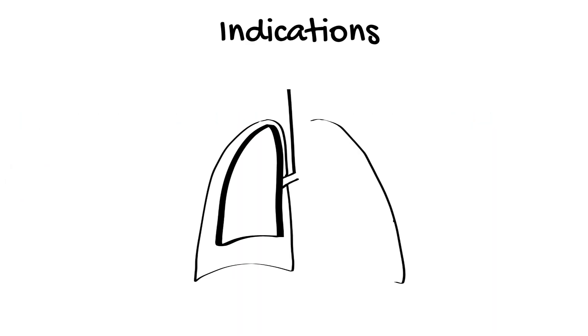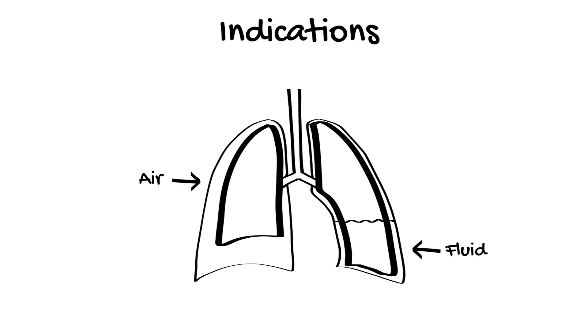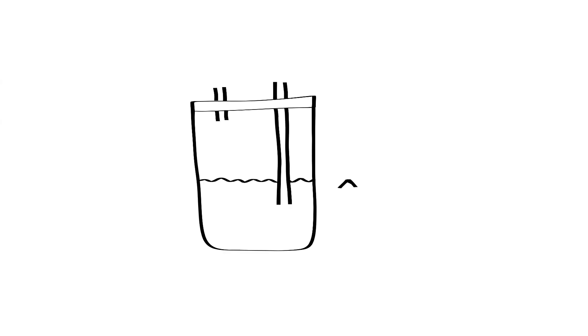Chest drains are inserted when there is air or fluid in the pleural space that needs to be drained. The simplest form of chest drain is a single chamber chest drain with an underwater seal. This type of drain is used when there is a pneumothorax to allow air in the pleural space to leave whilst preventing air from going back into the pleural space during inspiration. Generally around two to three centimeters of water will allow air to leave whilst preventing movement of air back into the pleural space.